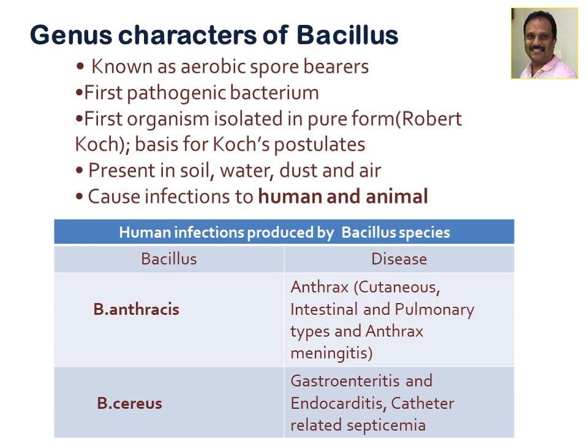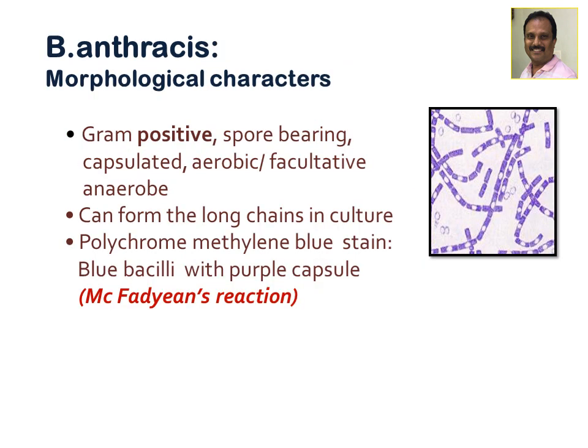Two important Bacillus species produce human disease. One is Bacillus anthracis, the causative agent for anthrax, which presents in three or four forms: cutaneous anthrax, intestinal anthrax, pulmonary anthrax, and anthrax meningitis as a complication of pulmonary anthrax. The second is Bacillus cereus, which causes gastroenteritis, endocarditis, and catheter-related septicemia.